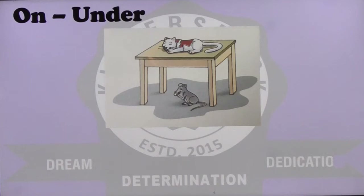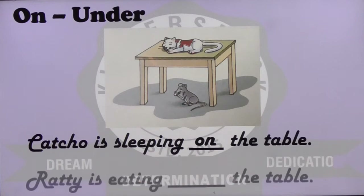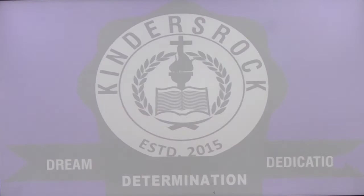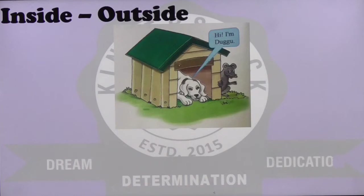Another concept: on and under. Did you see a table? On the top of the table you have the cat, so the cat is on the table and Ratty is chewing something under the table. Catcho is sleeping on the table and Ratty is eating under the table.